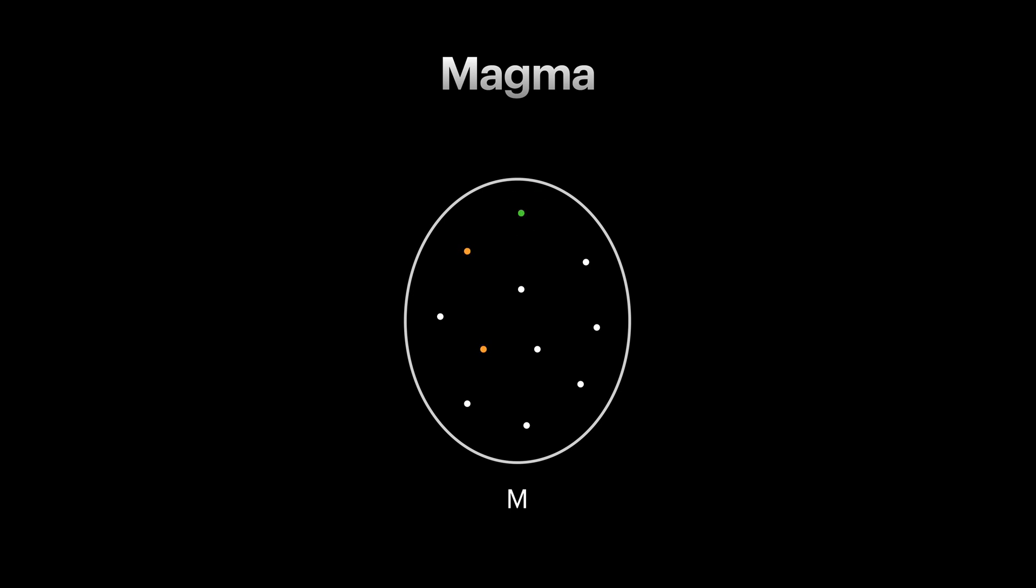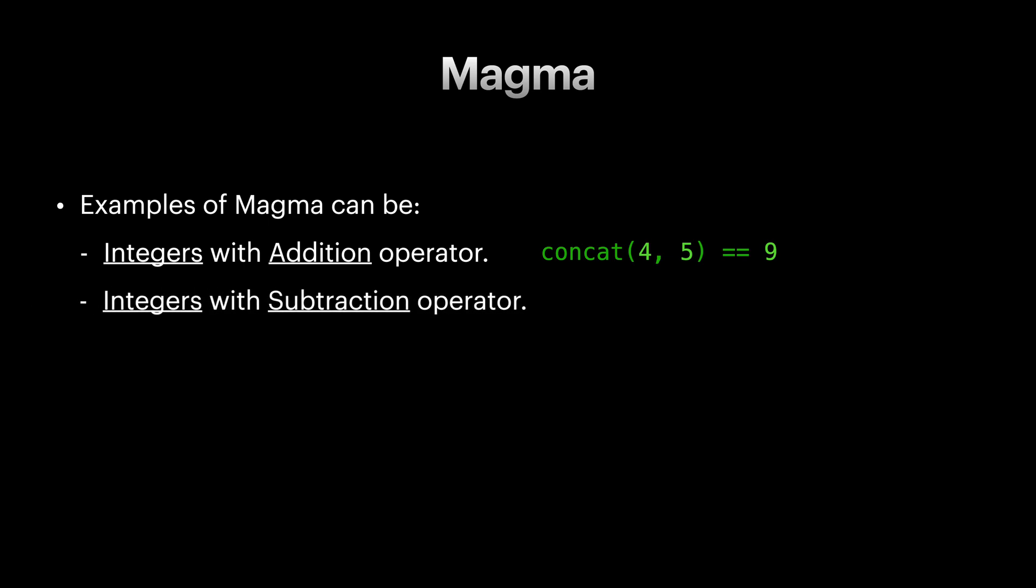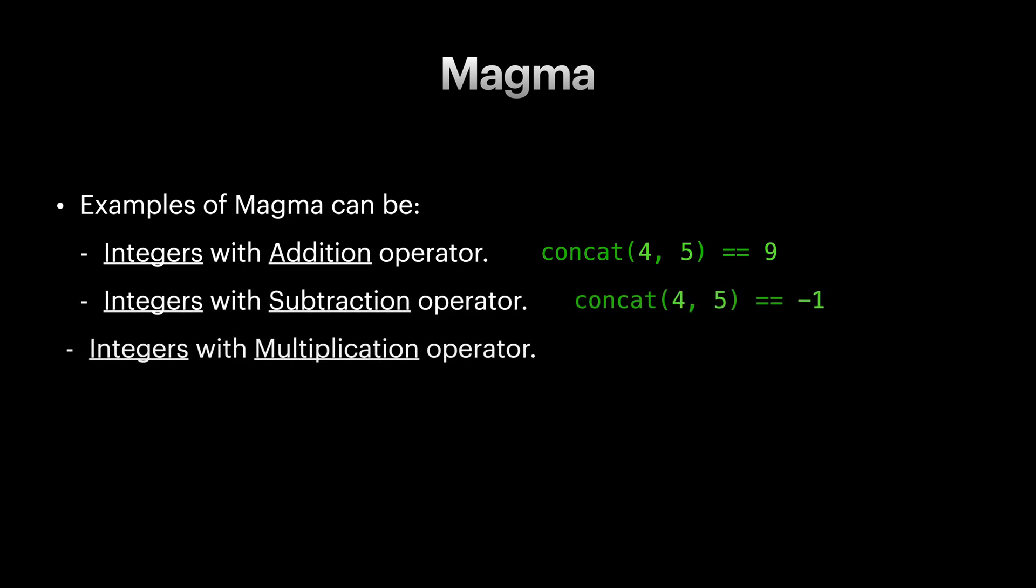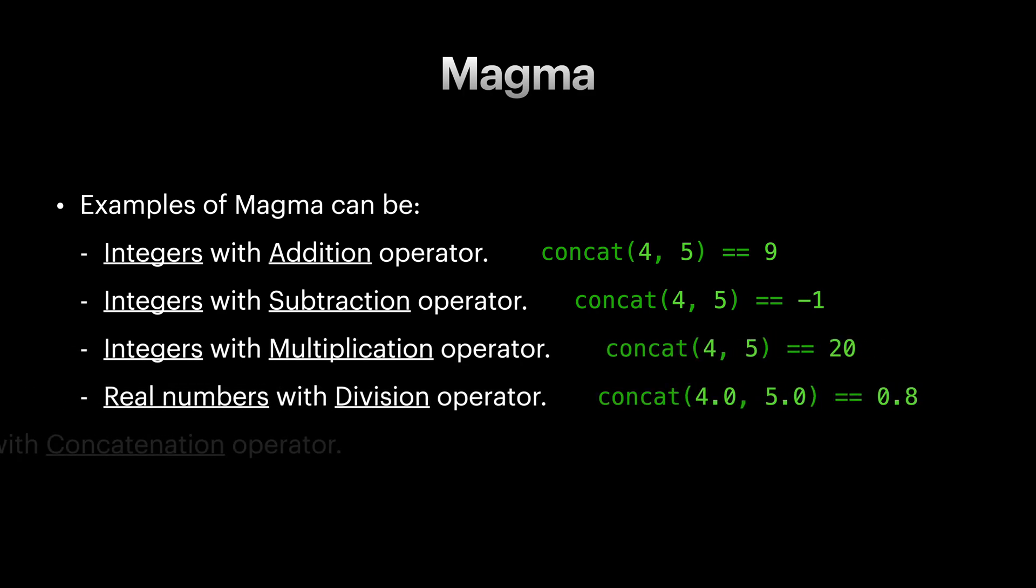One example of magma can be integer type with addition operator. Adding two integers always results in another integer. Some other examples are integers with subtraction, integers with multiplication, real numbers with division, arrays with array concatenation, and strings with string concatenation.